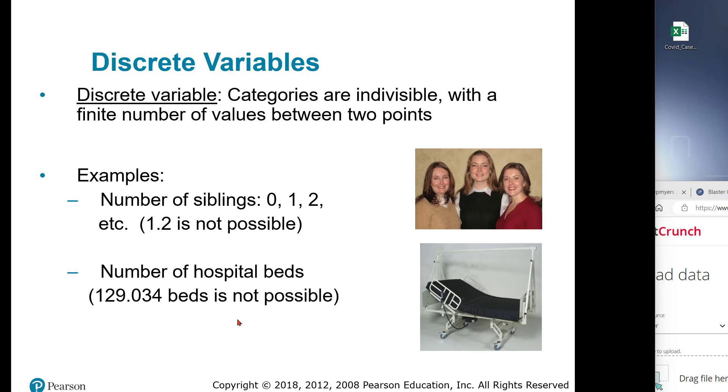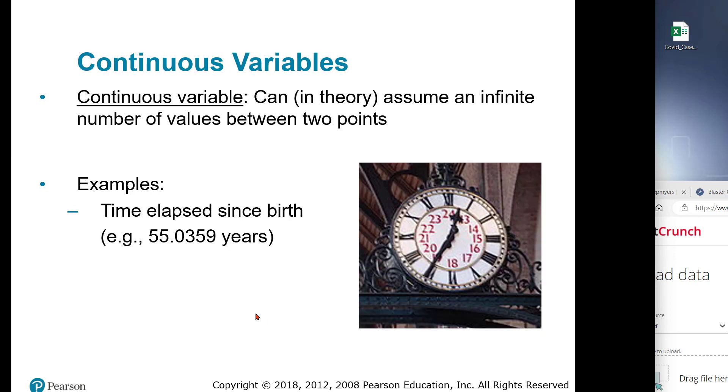For continuous variables, in theory, they can have an infinite number of values between two points. If you're doing miles per gallon, you can have 23.1 or 24.8. It's not a whole number. Time, if it's running for an outcome variable, it's going to be continuous, it could be 12.8 seconds or 13 seconds. Those are examples of continuous variables, and this will affect how we put these values into the software and what kind of representations we'll give to the data.